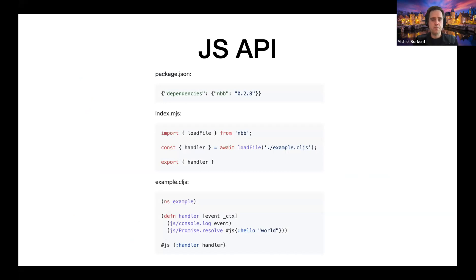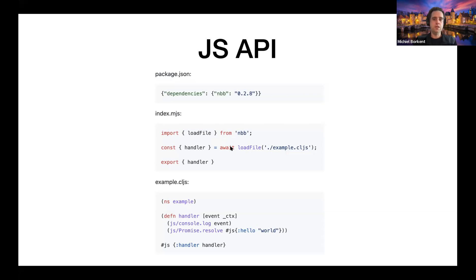There's a JavaScript API if you want to make an AWS Lambda function — it looks like this: you have a wrapper JavaScript file that the Lambda environment expects, from which you call NBB. You `import { loadFile } from 'nbb'`, then `await loadFile('example.cljs')` — it's asynchronous. That exports some function which you then re-export. On the ClojureScript/NBB side, this is basically all the code you need to write an AWS Lambda function.